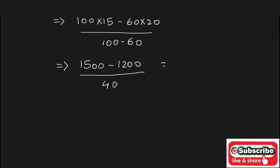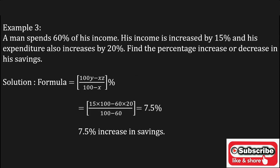Now 1500 minus 1200 is 300 upon 40, which gives you the answer 7.5%. Since the answer is positive, there is a 7.5% increase in the man's savings. In this way you can solve the given problem.